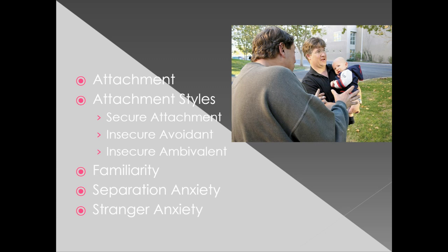The other 25% developed insecure attachments. The insecure avoidant attachment was demonstrated when the child was very clingy to the mother and wouldn't leave her side. When the mother left, the child became extremely distraught, and interestingly, when the mother returned, the child rejected her as a way of showing they were upset she was gone. The third type, insecure ambivalent attachment, is when the child wasn't near mom at all, showed no distress when mom left, and didn't seem to care when mom returned — being ambivalent about the emotional connection.